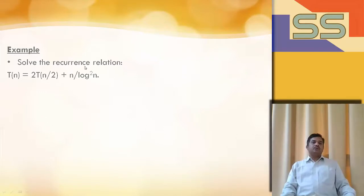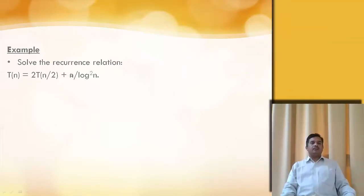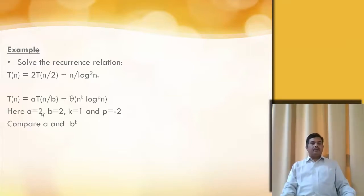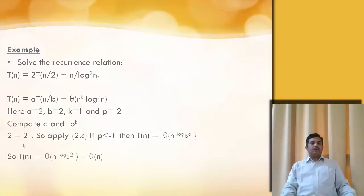Solve the recurrence relation T(n) = 2T(n/2) + n/log²(n). Here a = 2, b = 2, k = 1, and p = -2. Comparing a and b^k: 2 = 2^1. But here p is less than -1, so we apply formula 2c. The formula gives T(n) = Θ(n^(log base b of a)). Substituting a and b, we get Θ(n).